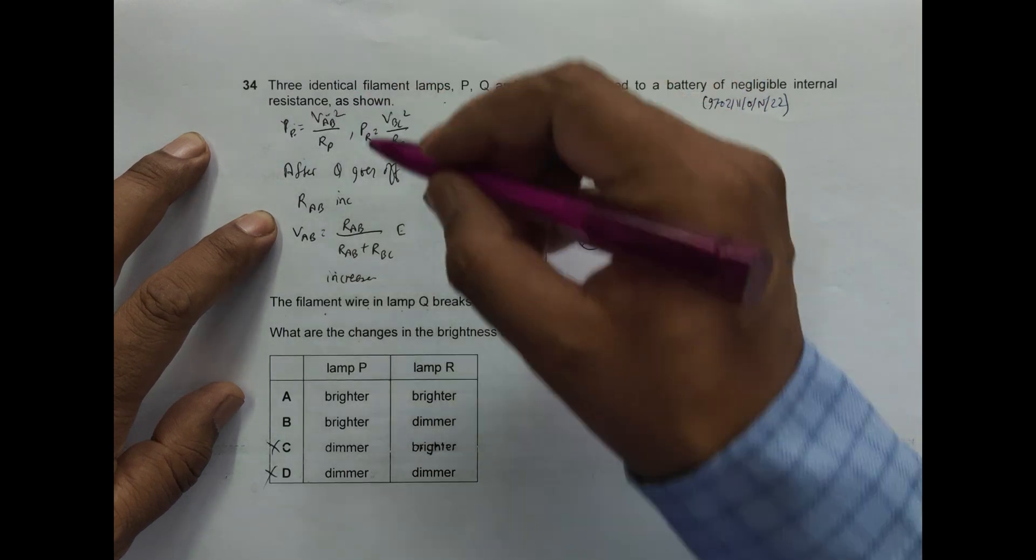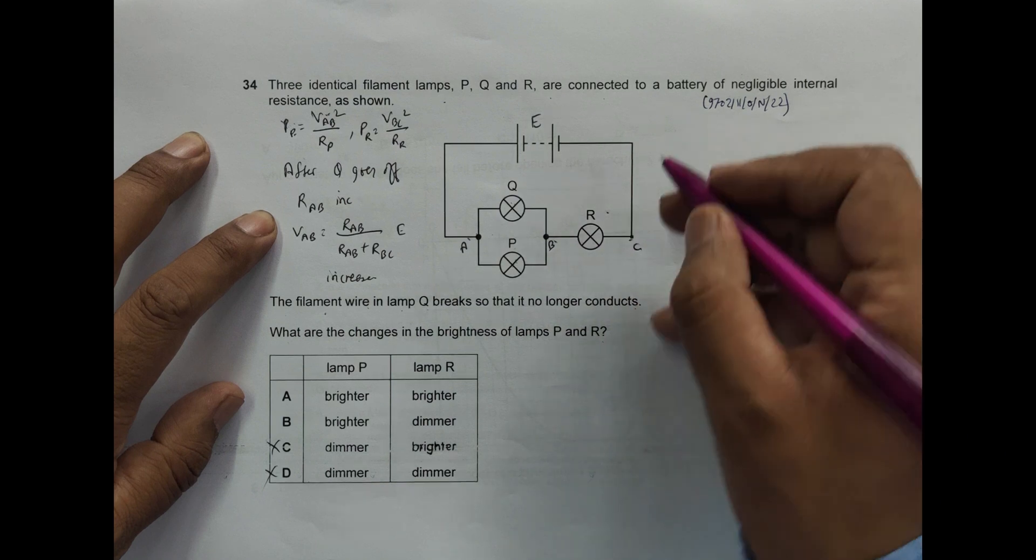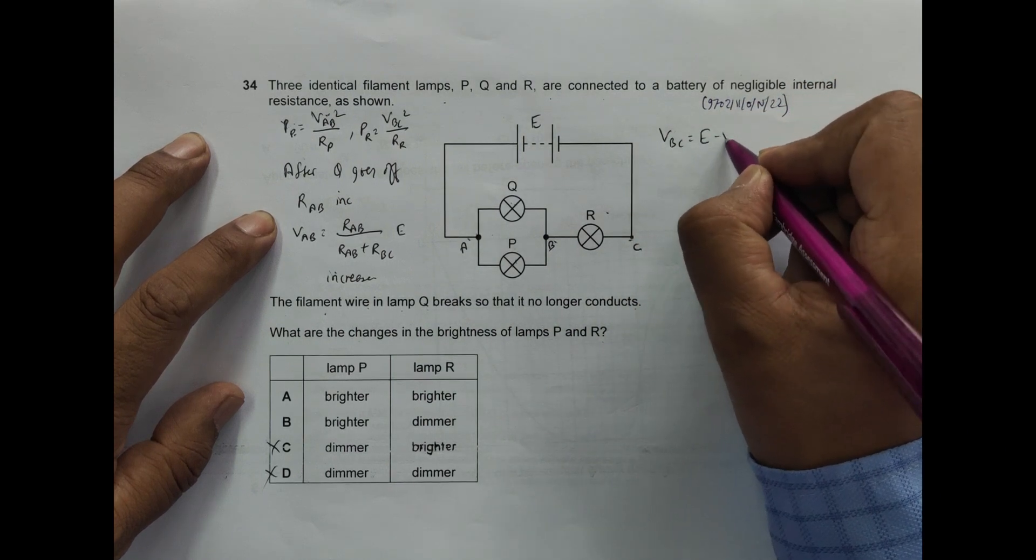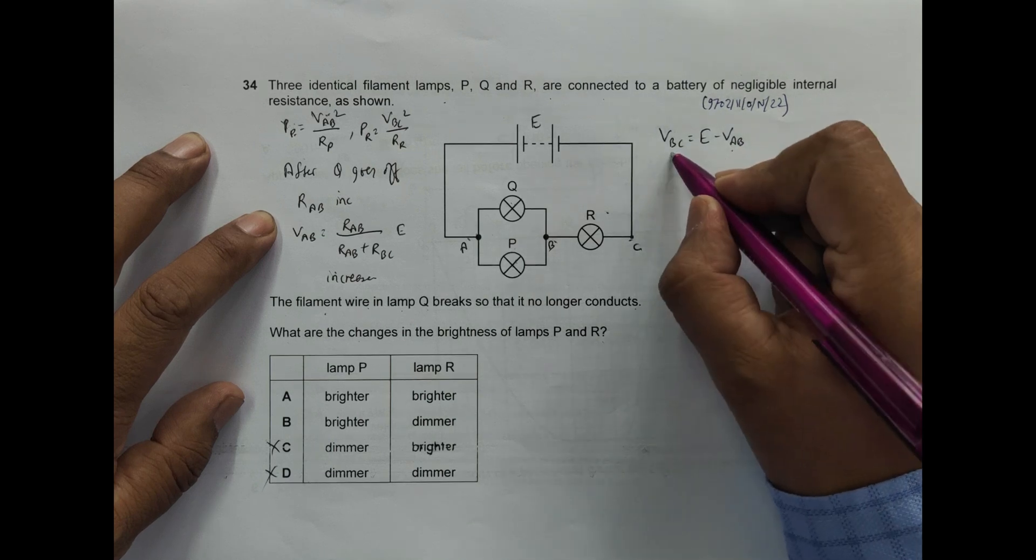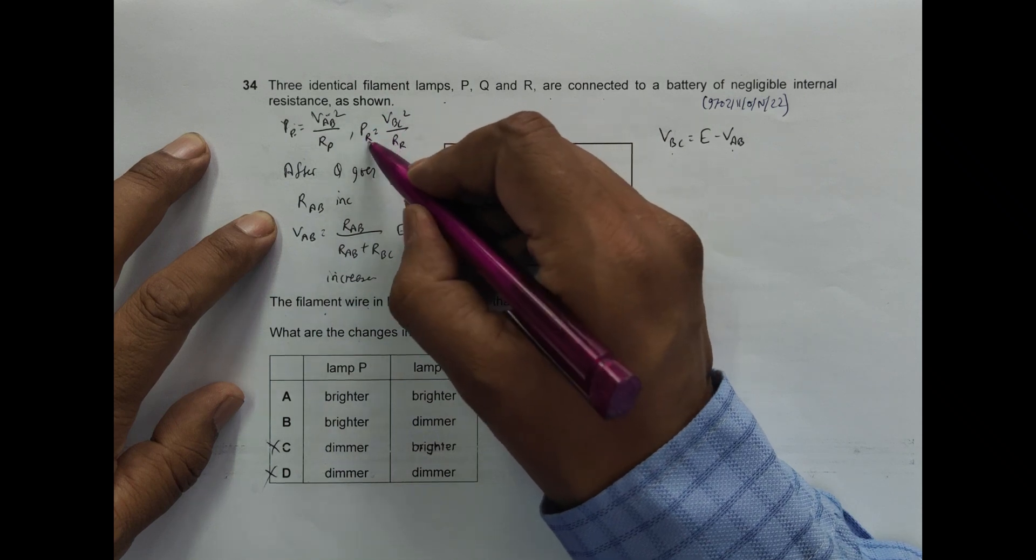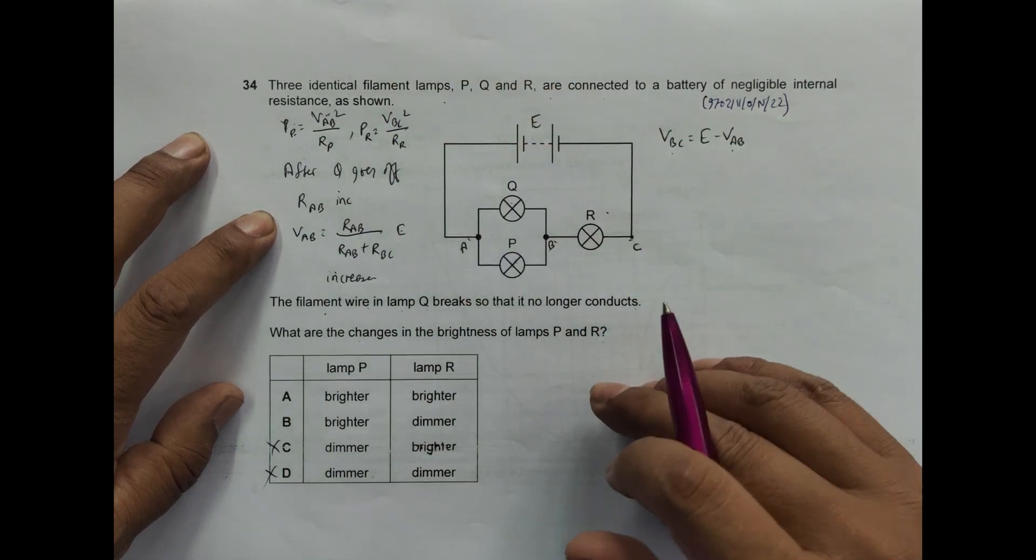Now let us go to this. If V_AB increases here, this V_BC should decrease because V_BC should be equal to E minus V_AB. If this increases, this should decrease. So V_BC should decrease, and if this decreases, P_R should decrease. P_R decrease means it will become less brighter or dimmer.